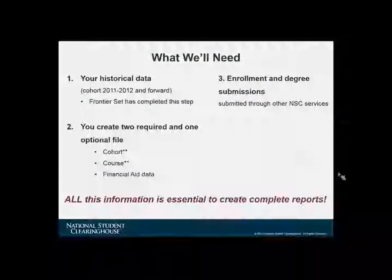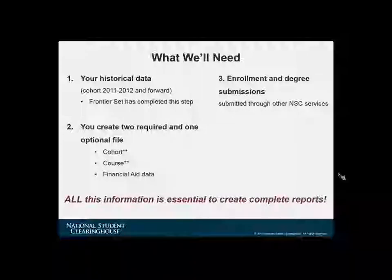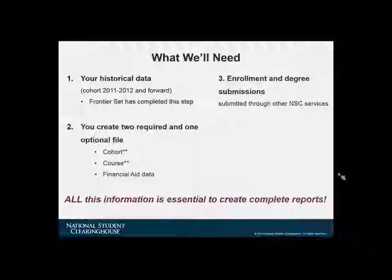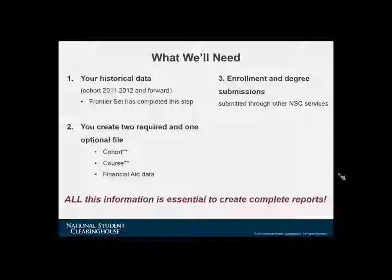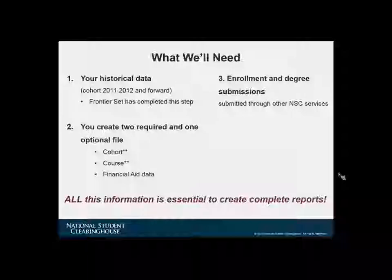For those submitting their data for the first time, please send us your cohort and course data starting with the 2011-12 cohort and onwards. The Clearinghouse is now collecting three data files: the cohort file, which for this submission window should include all students that enrolled at your institution during the 2017-18 spring and summer terms; the course file, which is a cumulative file listing courses taken in the 2017-18 academic spring and summer terms for all students included in any of your current and past cohorts; and the financial aid data file, which is optional, whereas the cohort and course files are required. Please include data relevant to the 2017-18 academic year for all students in any of your current or past cohorts.